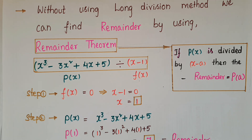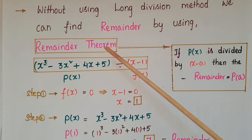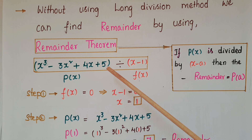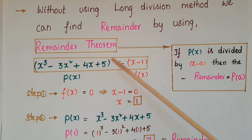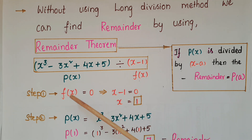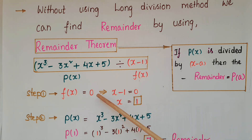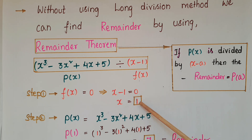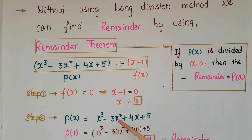Now I am going to tell you how to find the remainder without using the long division method — we use the Remainder Theorem. So this polynomial p(x) is divided by x - 1. In step 1, make f(x) equal to 0. Here f(x) is x - 1, so x - 1 = 0, which gives x = 1. Then replace this value of 1 into the first polynomial p(x), where p(x) = x³ - 3x² + 4x + 5.